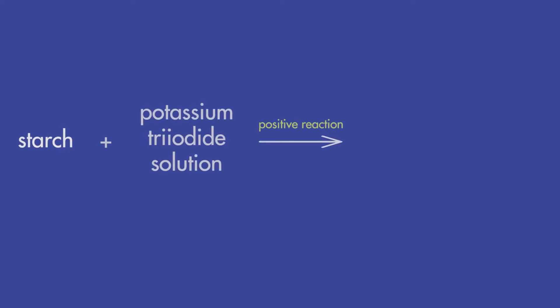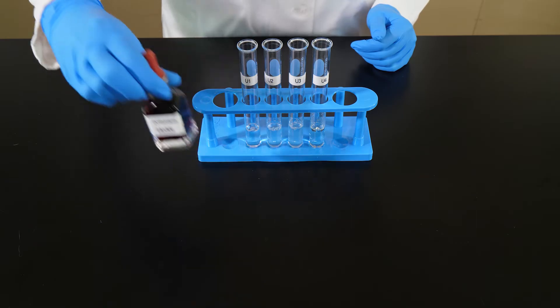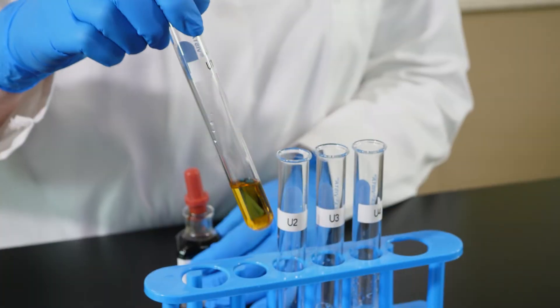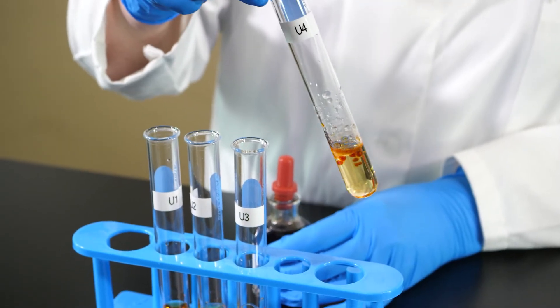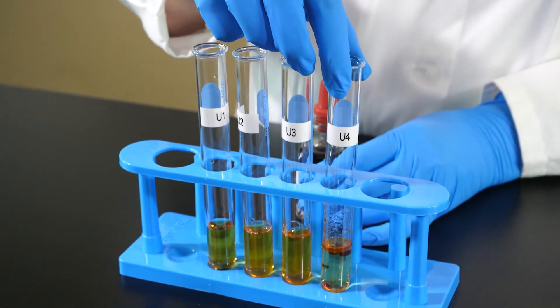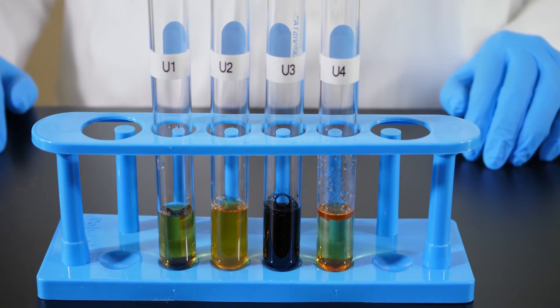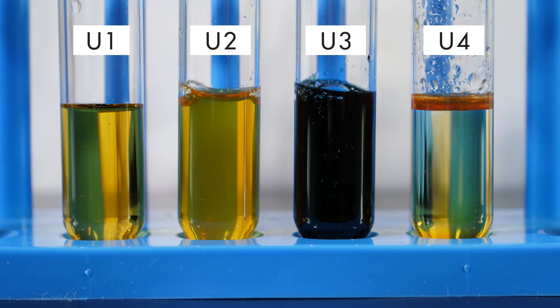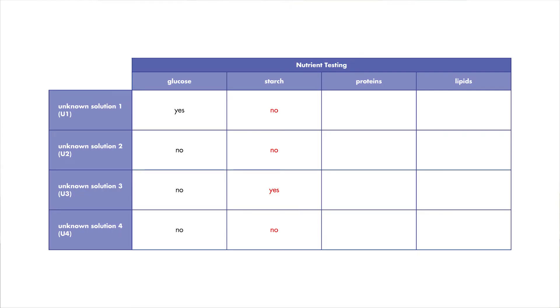If starch is present in a solution, a positive reaction between potassium triiodide solution and starch will occur, and the solution we are testing will turn black. We add 4 drops of potassium triiodide solution to a sample of each of the unknown solutions, then swirl each test tube to mix the contents. The reaction should take about 30 seconds. The solution in the test tube containing unknown solution 3 turned black; therefore, we know that starch is present. Since none of the other unknown solutions turned black, we know that starch is not present in those solutions. Record your observations in your lab journal.